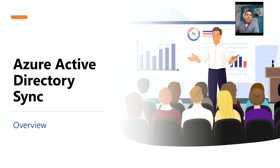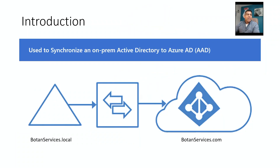Let's get some terminology out of the way. Azure AD Connect is used to synchronize an on-prem Active Directory to Azure AD, also known as AAD. For our demo, I'm going to be using botan-services.local as the on-prem domain and synchronizing that to botan-services.com, which is the Azure AD. The one on the left is on-prem; the one on the right is the cloud AD.